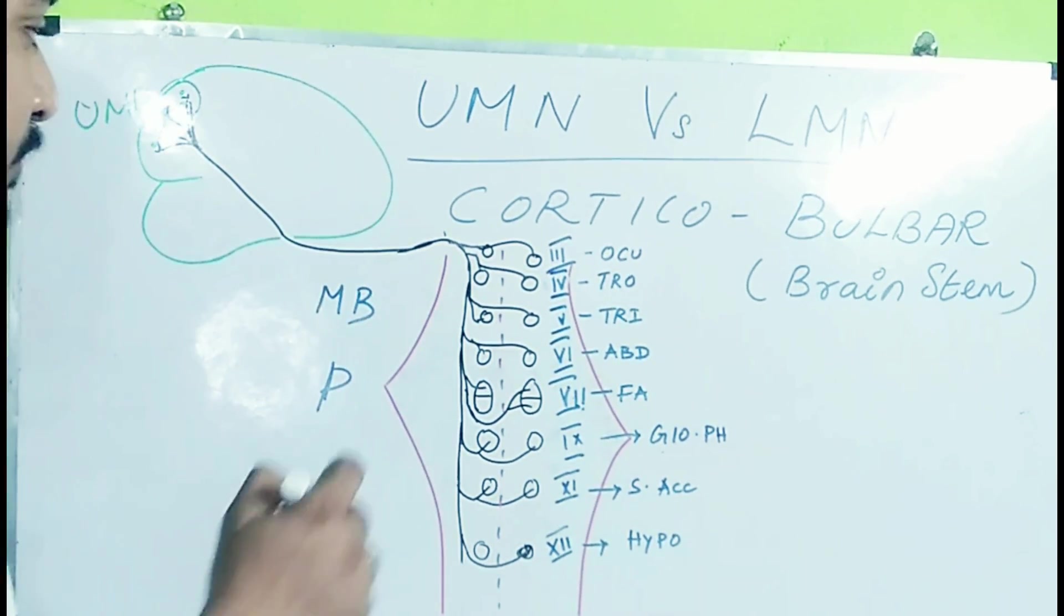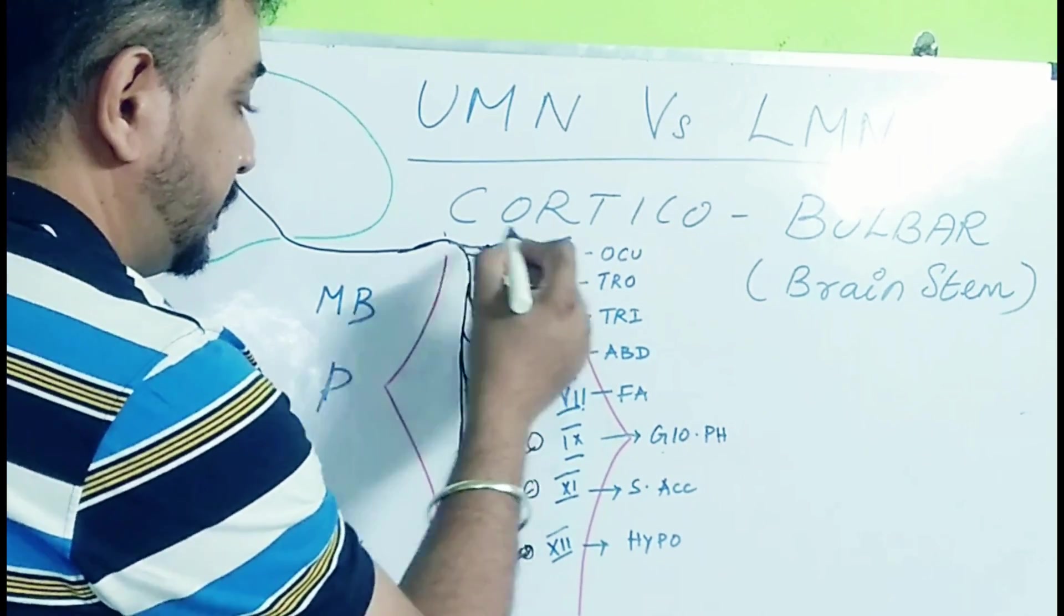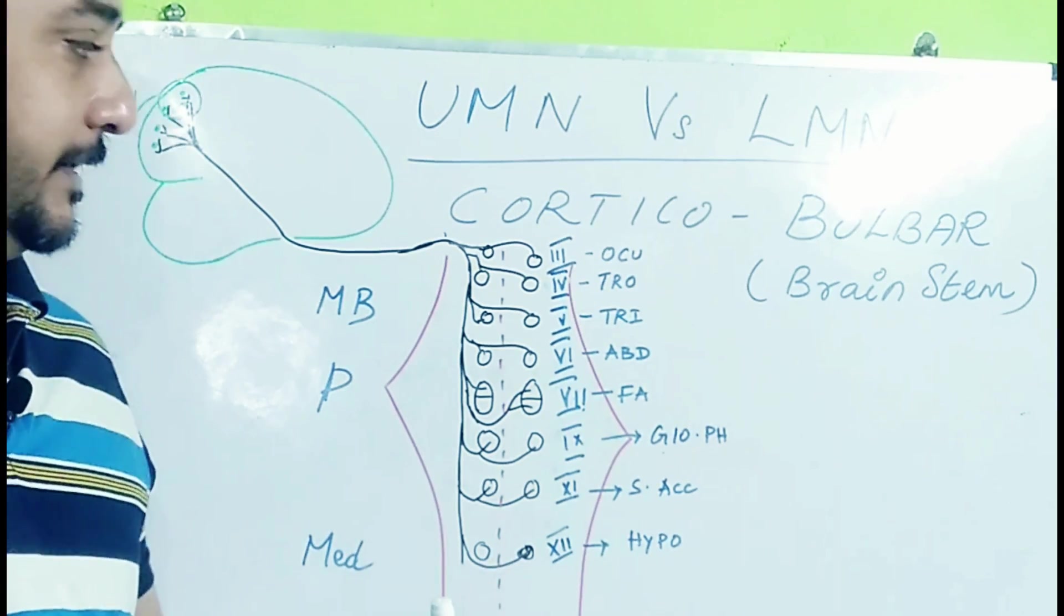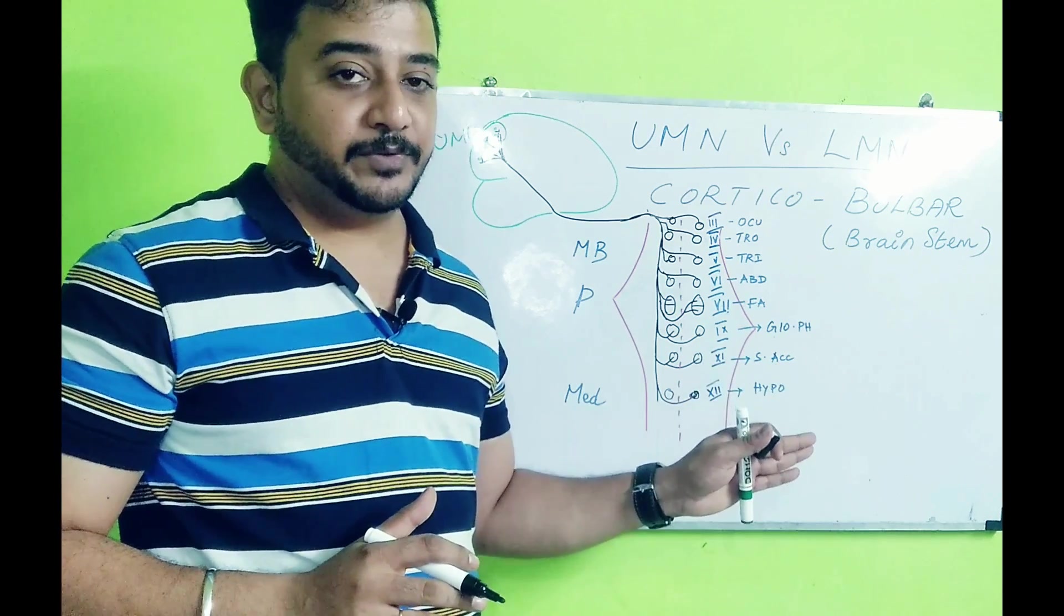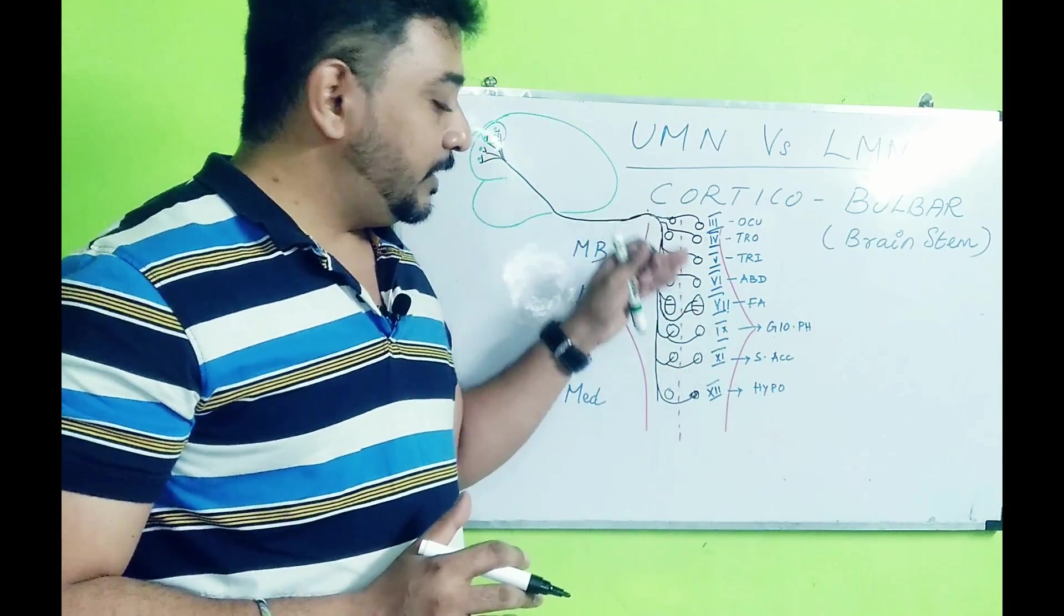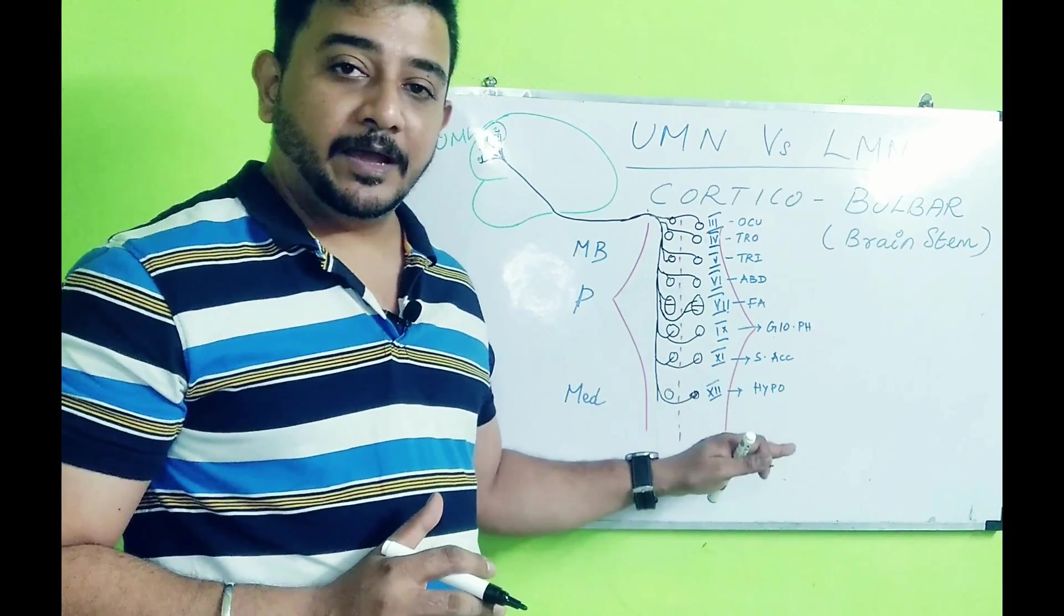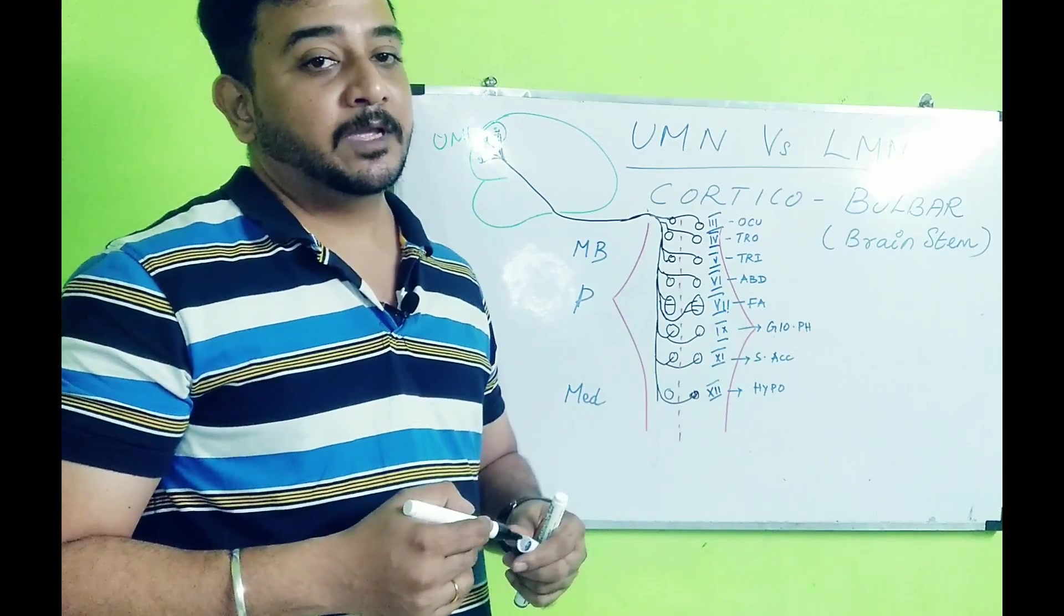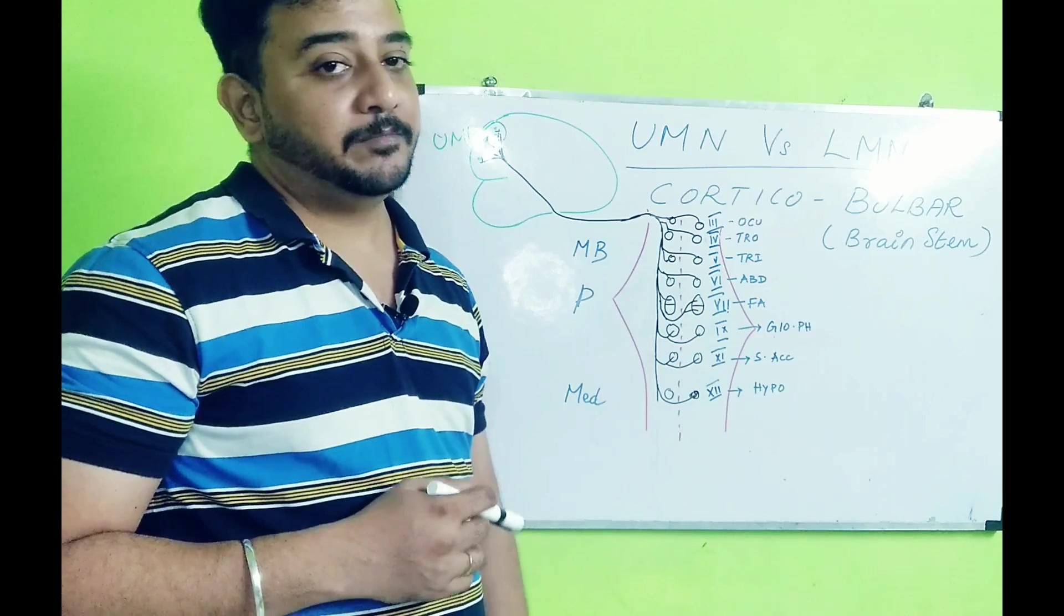It comes all the way and gives twigs to the nuclei of the cranial nerves, not all the cranial nerves but the cranial nerves listed here. The exception being the olfactory and optic, which arise from the brain. The remaining cranial nerves arise from the brainstem, and the spinal accessory nerve has some twigs onto the spinal cord also. So predominantly all 10 cranial nerves except the first and second arise from the brainstem.